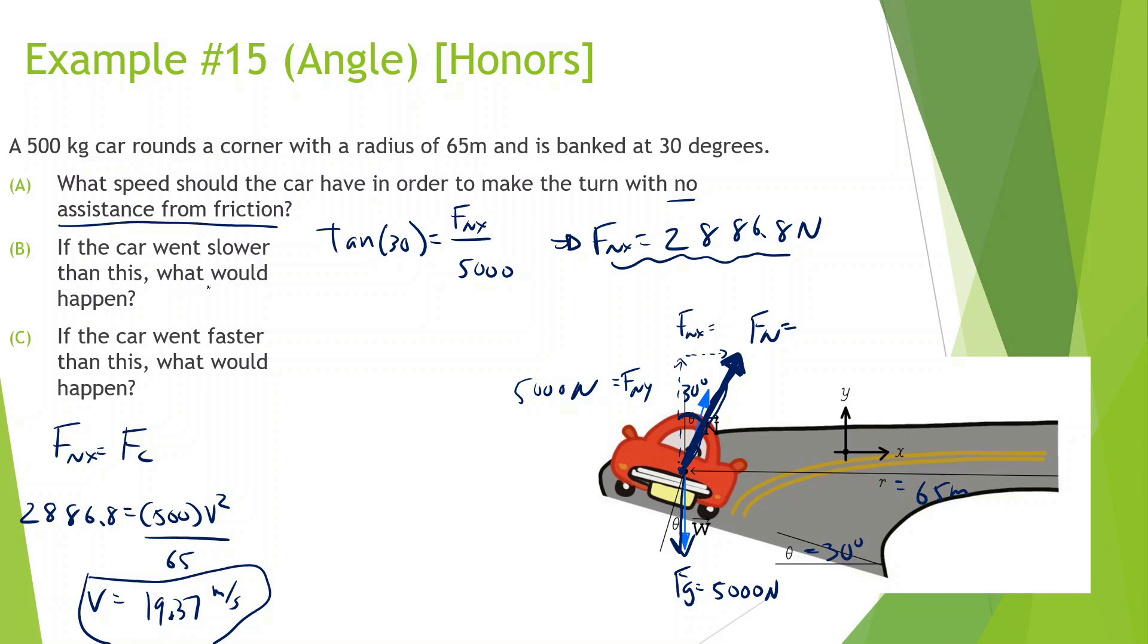It says if the car went slower than this, what would happen? So if the car went slower than this, then it'd still be able to go around the curve, but there would just be friction helping it. So there would be friction going this way, keeping it up a little bit as it goes around the curve. It says if the car went faster than this, what would happen? If it goes too fast, it'll just skid or drift off. But if it goes only a little bit fast, friction will help it by keeping it on and going this time on the other side of it. So it depends. I hope that made sense. If the B and C was confusing, try not to think about it too much. But we're going to try other examples with this.